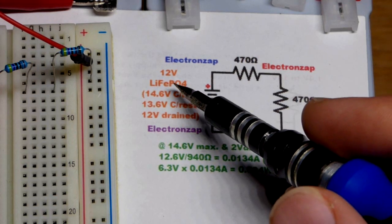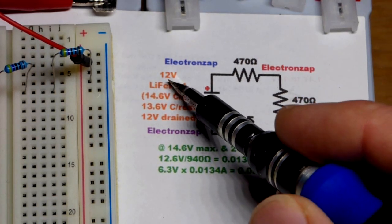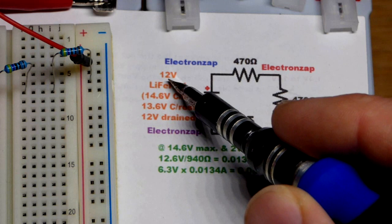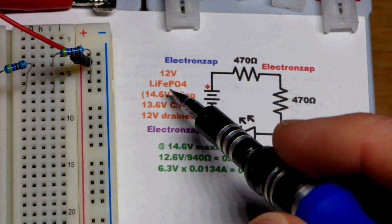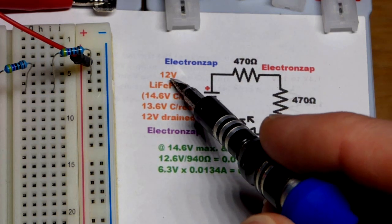But in any case we have the lithium iron phosphate battery. So it's a 12 volt battery. There's four cells in series that have a nominal voltage of 3.2 volts for a total of 12.8 volts.